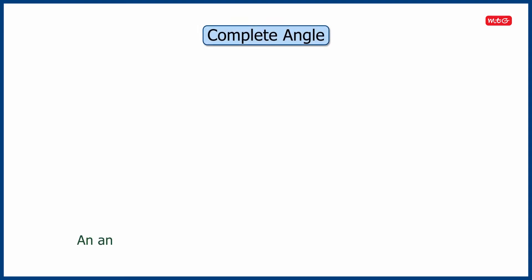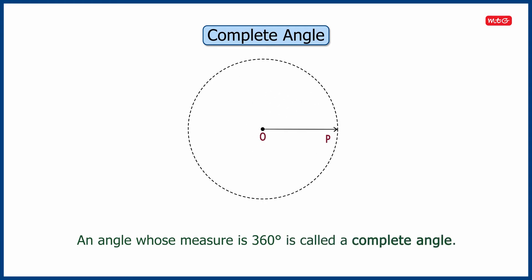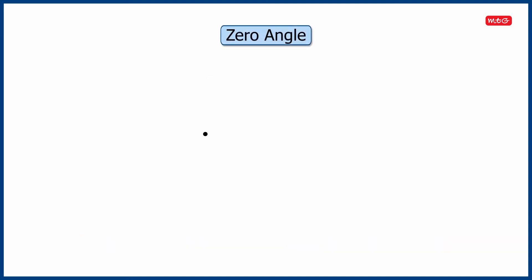Next is the complete angle. An angle whose measure is 360 degrees is called a complete angle. Here in the figure, angle POQ is a complete angle, as the arm OQ meets arm OP after tracing one full circle. The angle so formed is 360 degrees.